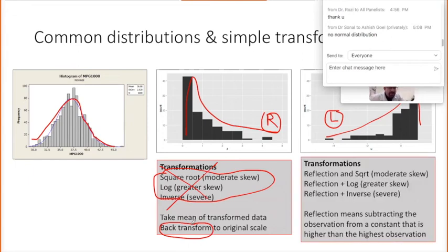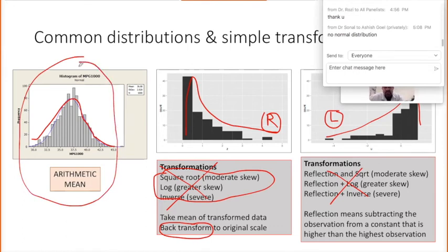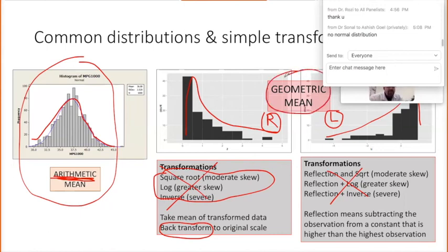Transformations for left-skewed data are more complicated — I've put them on the slide for completeness but won't discuss them here. The key concept: when you have normal data and take a mean, that is the arithmetic mean. When you apply a transformation, take the mean, and then back-transform, what you get is a geometric mean. So if you see the term 'geometric mean' in a paper, it means the authors first transformed their data and then back-transformed it — it is not the arithmetic mean.